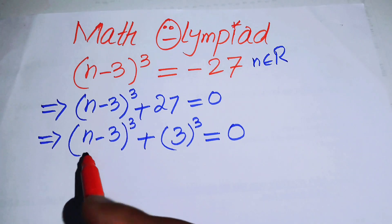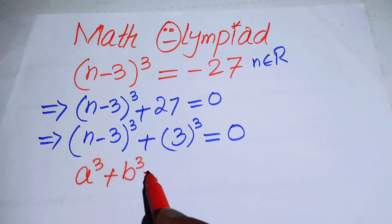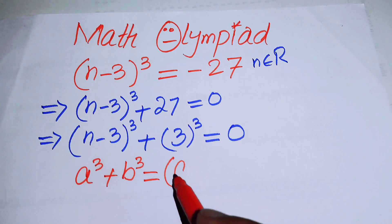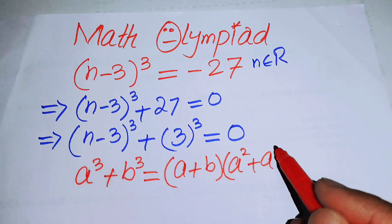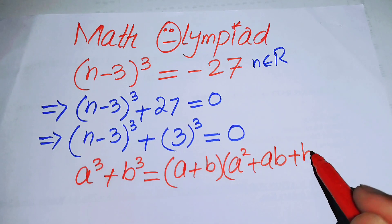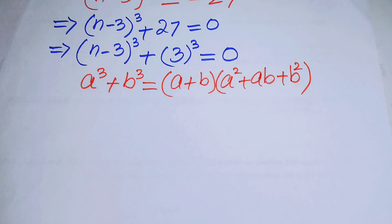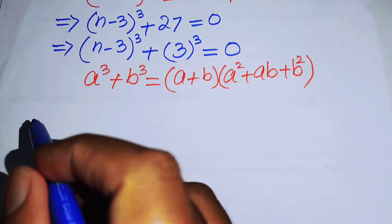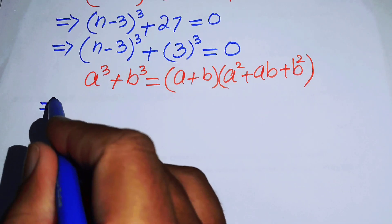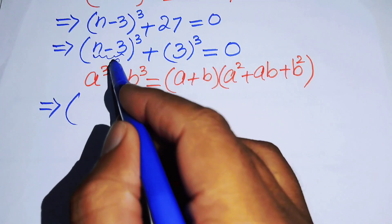Here we can see the sum of cubes formula: a cubed plus b cubed equals (a plus b) times (a squared plus ab plus b squared). We will now apply this nice cubic formula to the left hand side.